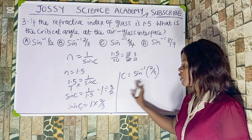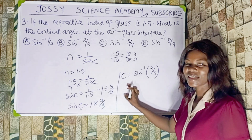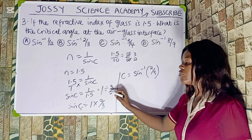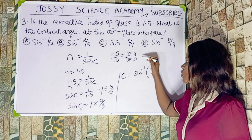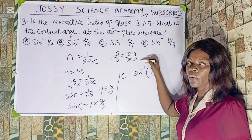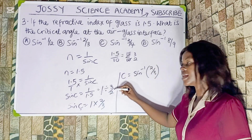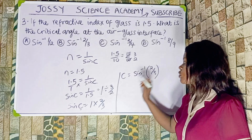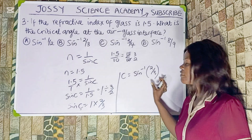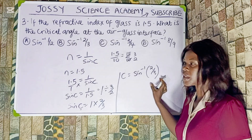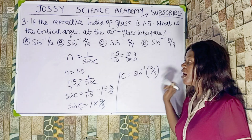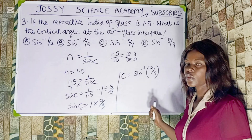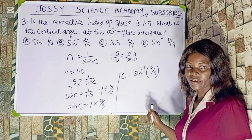By the time you compute that, you get the answer. I changed 1.5 to the fraction 3/2, then divided to get 2/3, and took the sine inverse. The correct option to this question is option B.